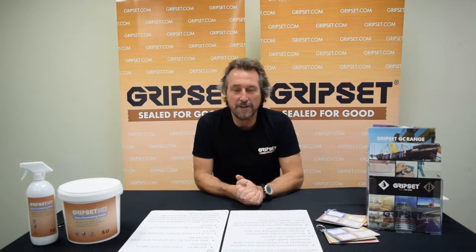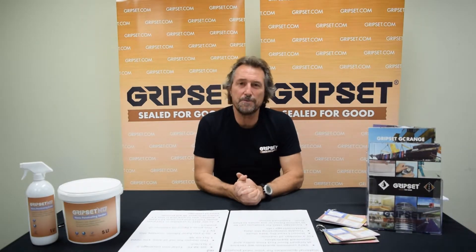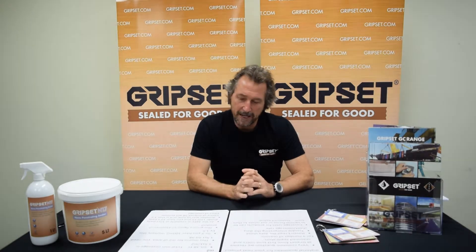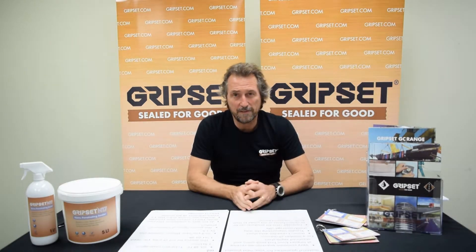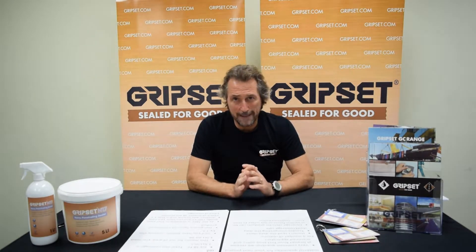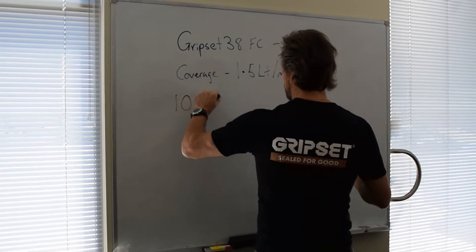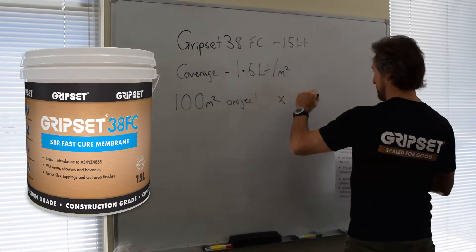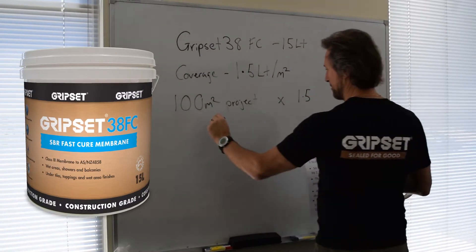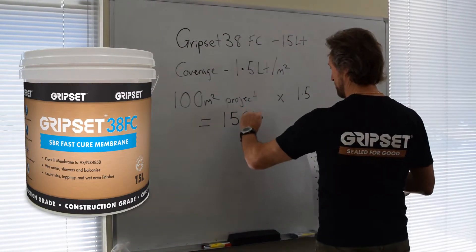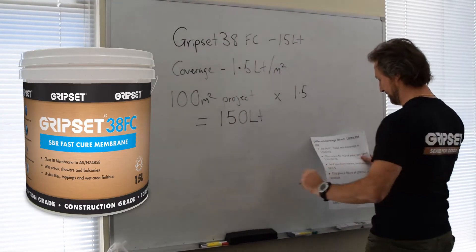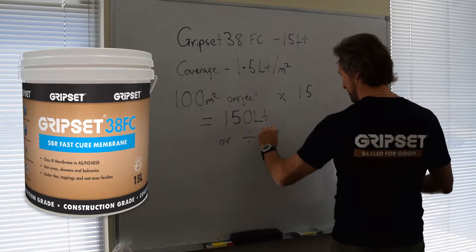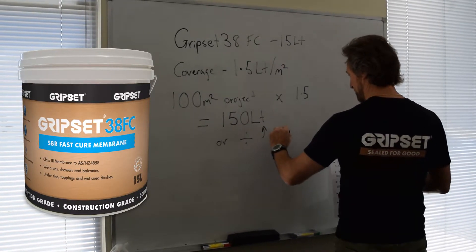So I've got 100 square meters of area to do, I know I need 1.5 liters per square meter — 1.5 times 100 equals 150 liters in total for the job. If I've got a GripSet F38 pail, which you can see coming up on screen now, in the 15-liter form, I divide that 150 by 15 and I need 10 pails to do the job. A real simple one.